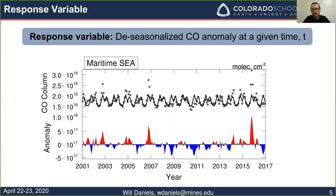The actual variable we use as a response is the de-seasonalized carbon monoxide anomaly at a given time T. The gray dots are the monthly averaged measurements of carbon monoxide from MOPITT. We can average all of the Januaries, all of the Februaries, etc., and plot that — that's the black line, which we call the seasonal trend. If we subtract that seasonal trend away from the data, we get the anomaly, plotted in the bottom there.